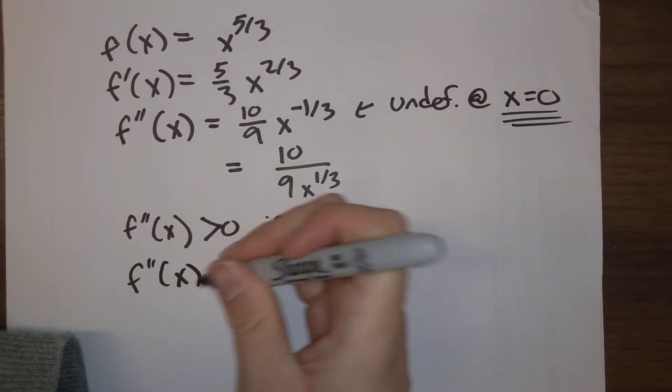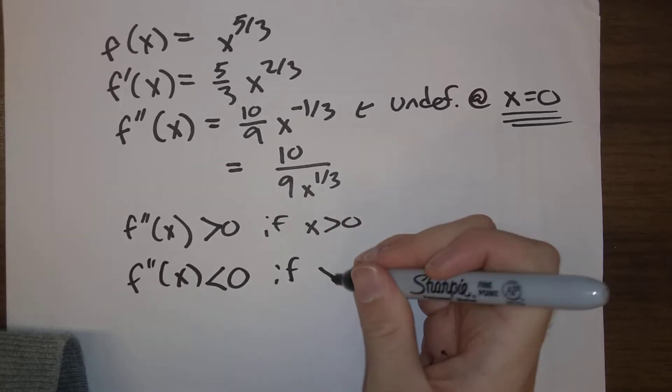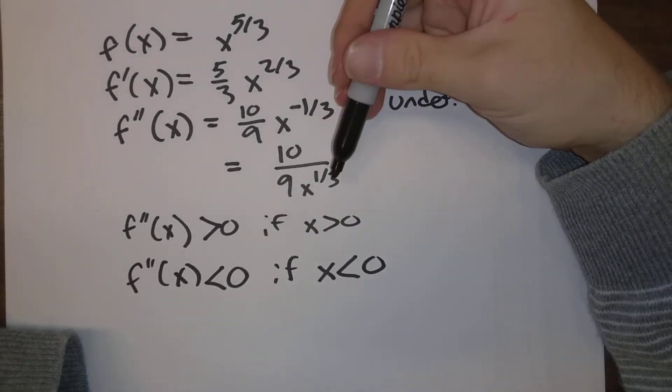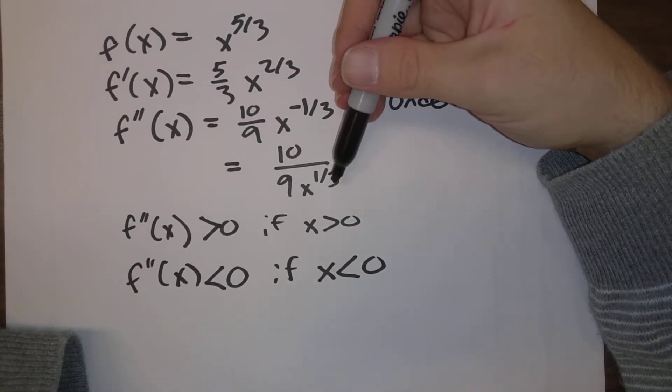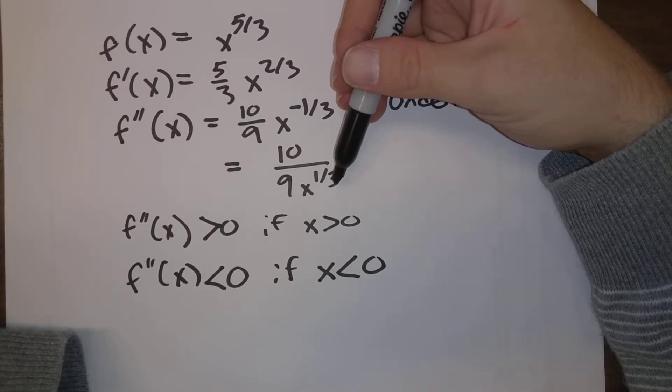The second derivative is going to be negative if x is negative. Plug negative numbers into the cube root. The cube root of a negative number is also a negative number.